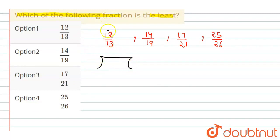First option is 12 upon 13. If we divide 12 by 13, we put the decimal point and it becomes 0. Then 13 into 9 is 117. The remainder is 3. Then we get 0.92 and something will come after.